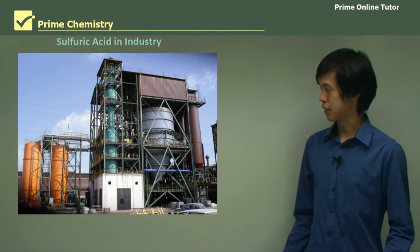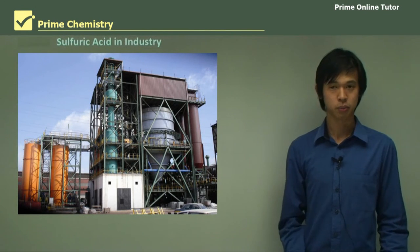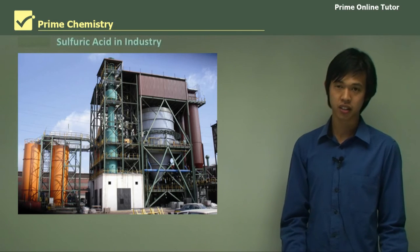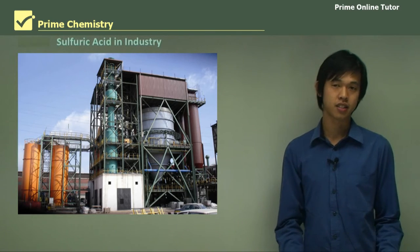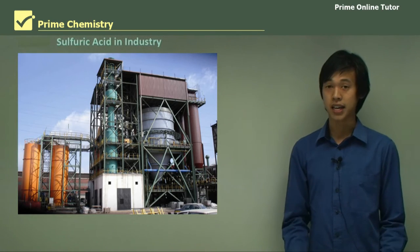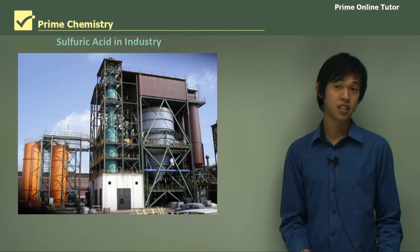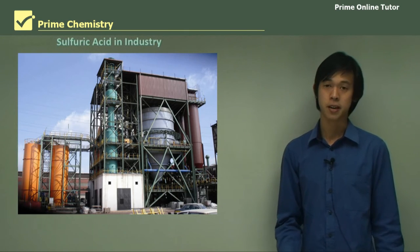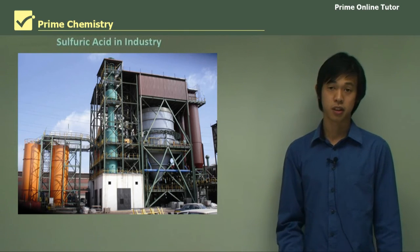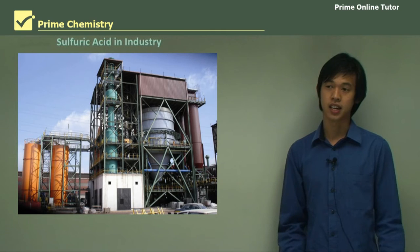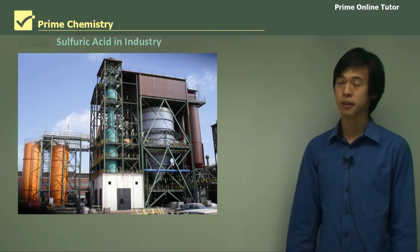A typical sulfuric acid production plant — there are many around the world and it's probably one of the biggest acids produced in industry today. Similar to sodium hydroxide and sodium carbonate, it's a very, very big industrial chemical.